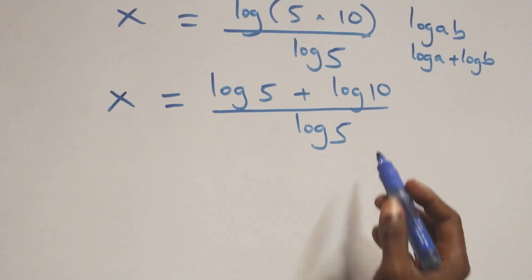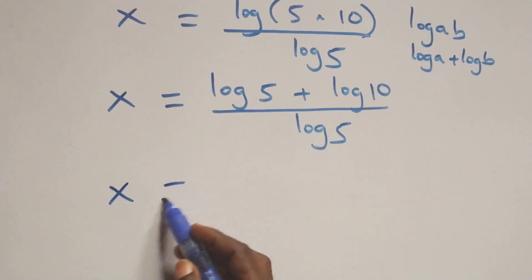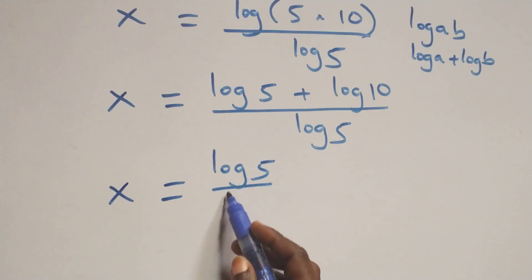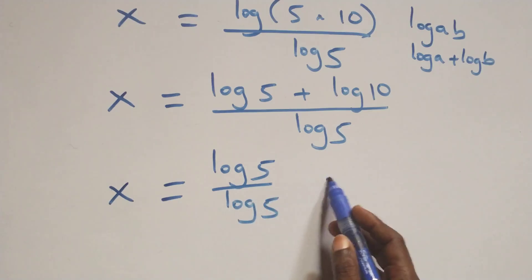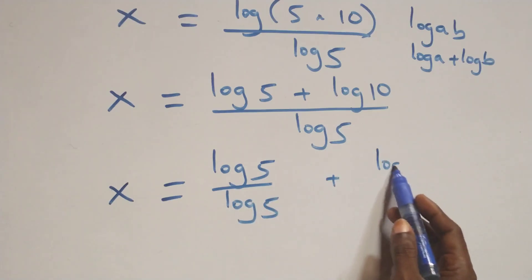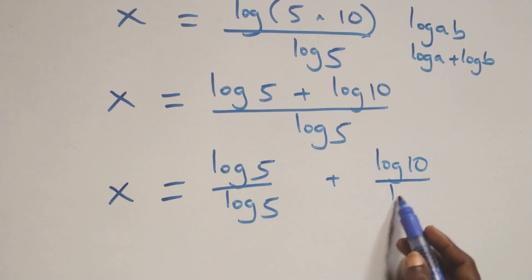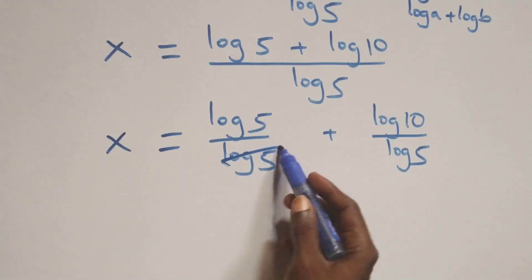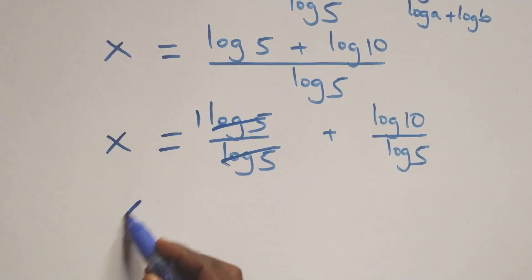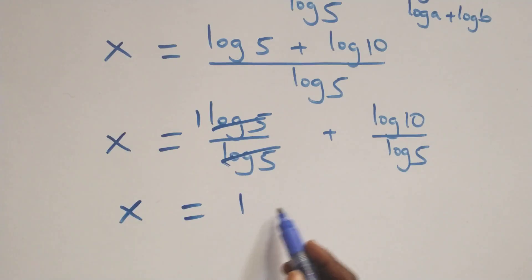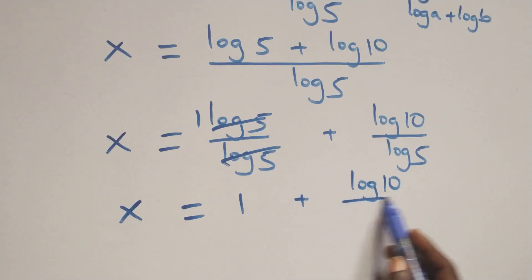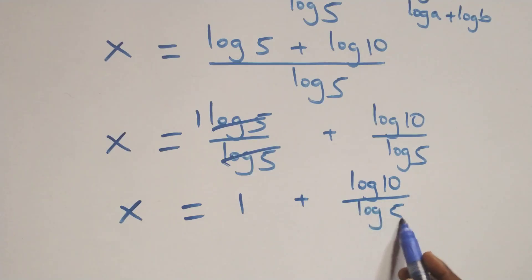Then here we separate this into two fractions and we have x equals to log 5 over log 5, and log 5 cancels each other — one is left — which implies x equals to 1 plus log 10 over log 5.